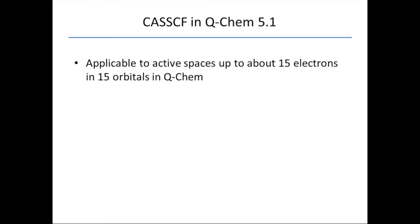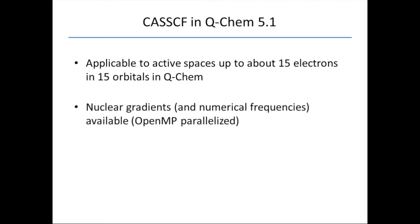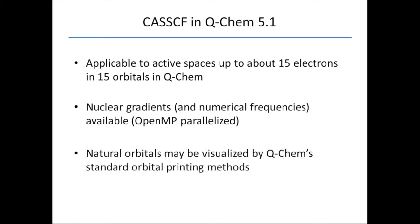Now let's talk about it in Q-Chem 5.1. This is now applicable to active spaces of about 15 electrons and 15 orbitals. There are nuclear gradients and therefore also numerical frequencies available. They are OpenMP parallelized. There are natural orbitals. You can generate natural orbitals from your CASSCF procedure, and they can be visualized using any of Q-Chem's standard orbital printing methods, or you can use them for further post-Hartree-Fock methodologies.